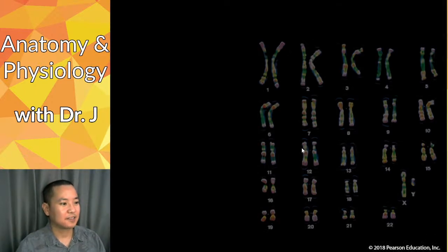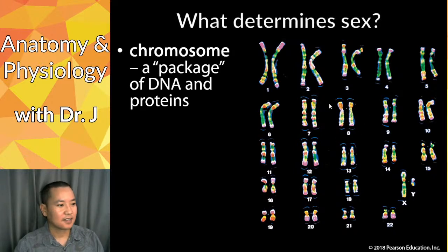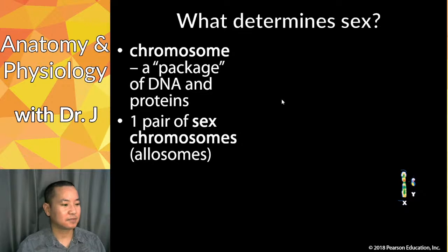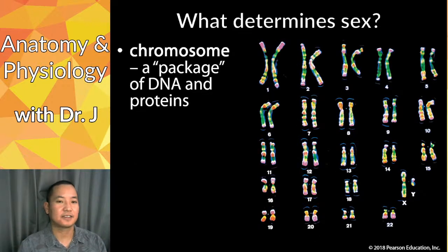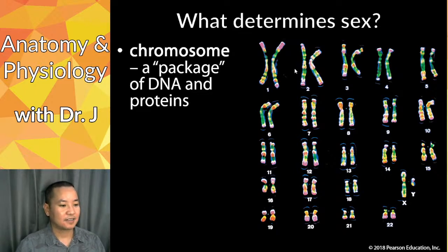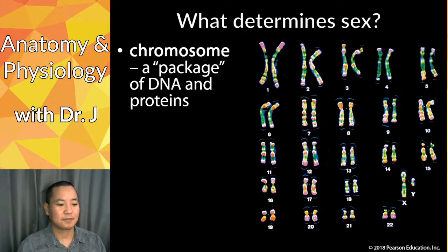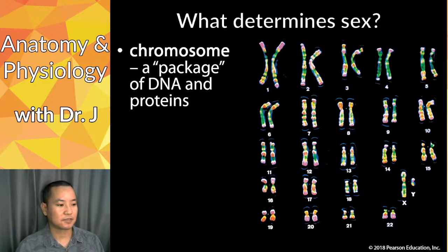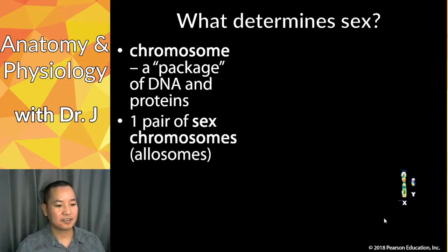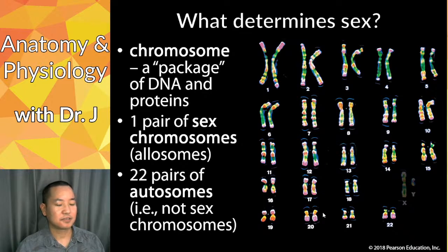What determines biological sex? Chromosomes are packages of DNA and proteins, and you have one pair of sex chromosomes. What we're looking at here is a karyotype — basically taking all condensed chromosomes from a cell and examining them under a microscope with fluorescent dyes. You might have heard of 23andMe — that's because you have 23 pairs of chromosomes. You inherit one set of 23 from your biological father and one from your biological mother, giving you 23 pairs total.